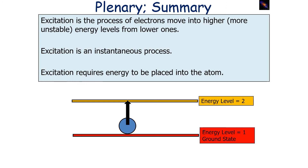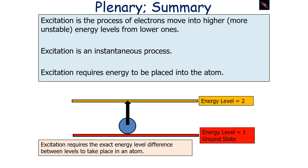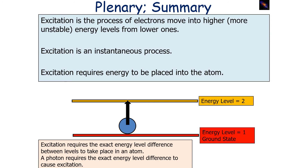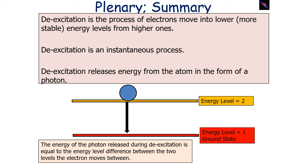To summarise: excitation is the process of electrons moving into a higher energy level from a lower one. Excitation is an instantaneous process and requires energy to be placed into the atom. Excitation can occur either due to the absorption of a photon by an atom, or by the transfer of kinetic energy from a colliding particle such as a free electron. Excitation requires the exact energy level difference between the levels involved. A photon will require the exact energy level difference to cause excitation, whilst a colliding particle will only lose the exact energy level difference from its kinetic energy store. De-excitation is the process of electrons moving into lower energy levels from higher ones, and is also an instantaneous process. De-excitation releases energy from the atom in the form of a photon, and the energy of that photon is equal to the energy level difference between the two levels the electron moves between.